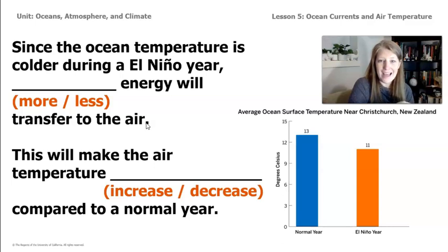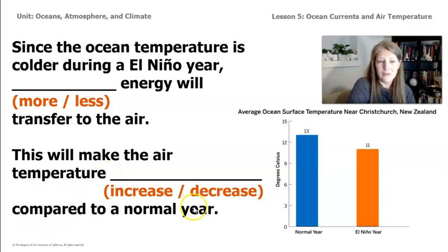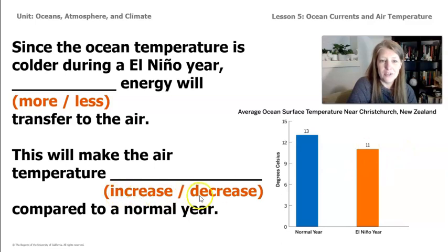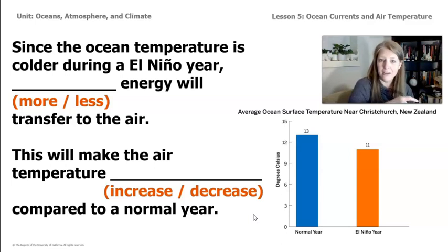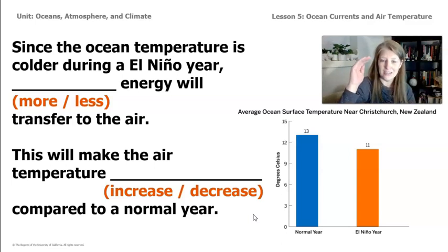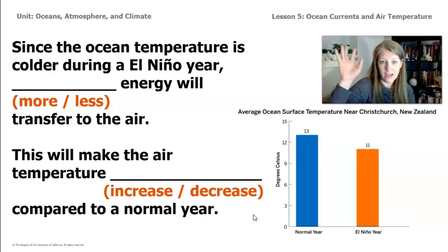So if less energy is transferred during an El Niño year, this will make the air temperature colder compared to a normal year. We already knew the air temperature was colder during El Niño, and we already knew the ocean temperature was colder during El Niño. But now, from all of the evidence collected today, we can explain that because the ocean temperature is colder, some energy from the air transfers to that colder ocean current, making the air temperature drop down as well.